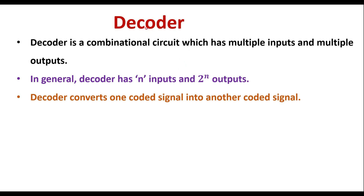In this video I will discuss about decoder — the definition of decoder and how to construct a 2-to-4 decoder. Decoder is a combinational circuit which has multiple inputs and multiple outputs. In general, a decoder has n inputs and 2-to-the-power-n outputs. Decoder converts one coded signal into another coded signal.